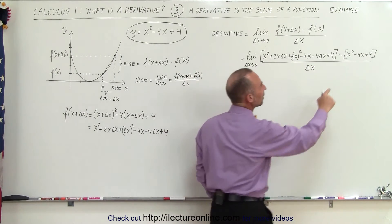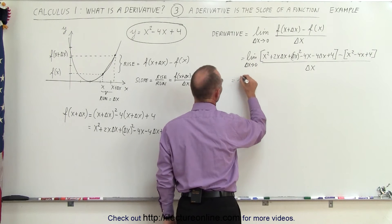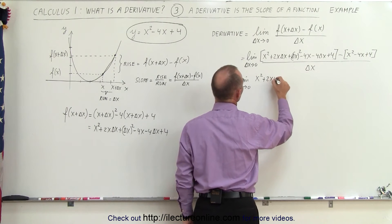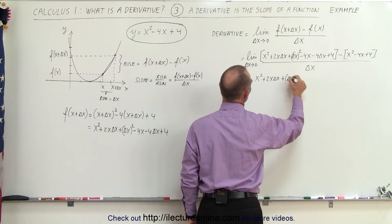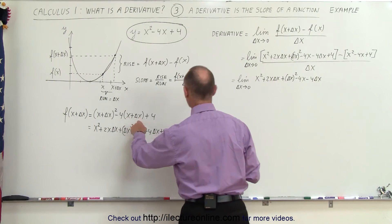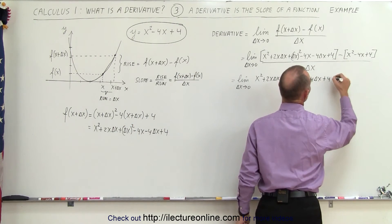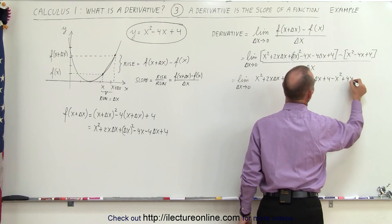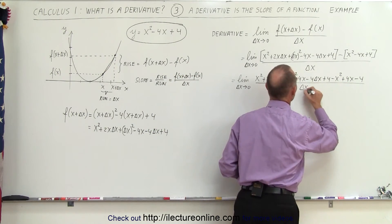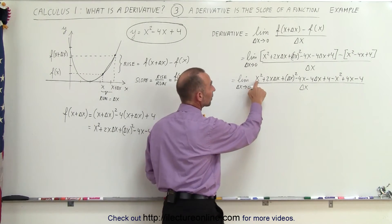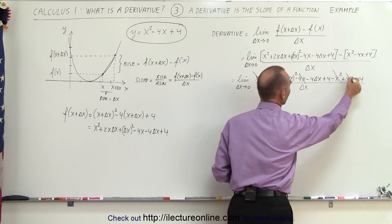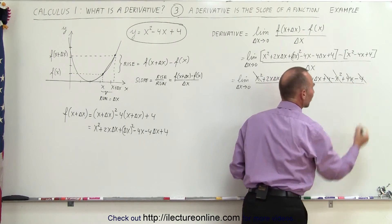Now we're going to remove the brackets and distribute the negative sign. This equals the limit as delta x goes to zero of x squared plus 2x delta x plus delta x squared minus 4x minus 4 delta x plus 4, minus x squared plus 4x minus 4, all divided by delta x. Notice we have x squared and minus x squared — those cancel out. We have minus 4x and plus 4x — those cancel out. And we have plus 4 and minus 4 — those cancel out. That's always the fun part of this method.